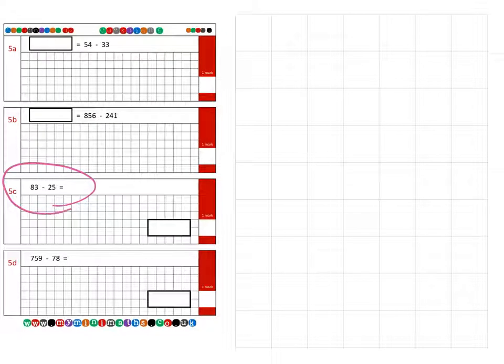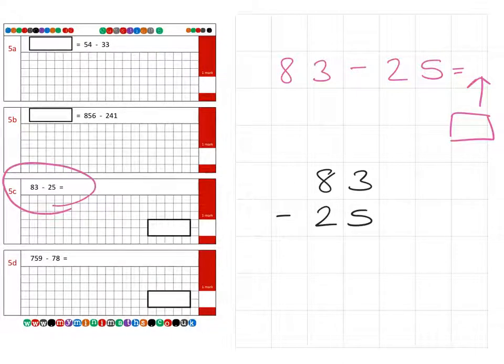Next, question 5c: 83 subtract 25. There's no box this time, but it's the same - just a blank space for the answer. We write out the question: 83 subtracting 25, in our units and tens columns.